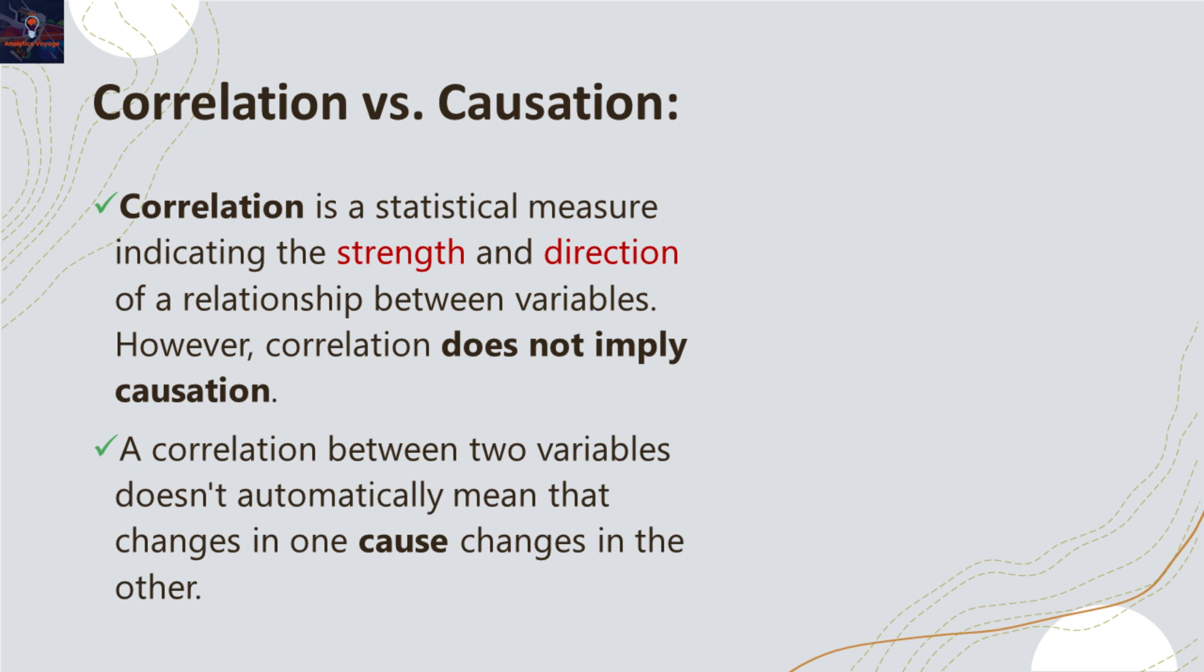Establishing causation requires deeper understanding of the relationship, which is normally achieved through experimental design or analysis of observational data, while accounting for potential confounding factors. It's crucial to emphasize that correlation does not necessarily imply causation.